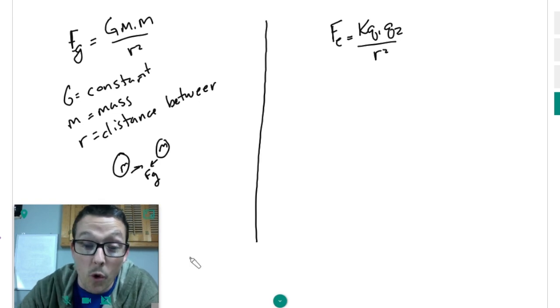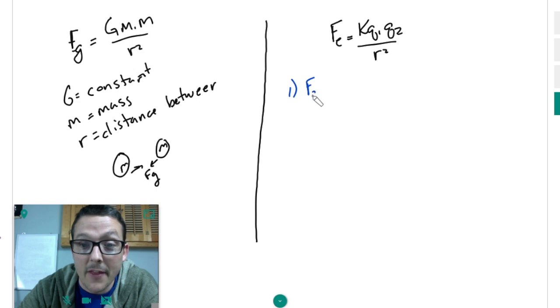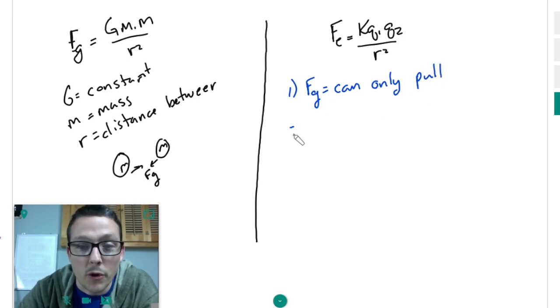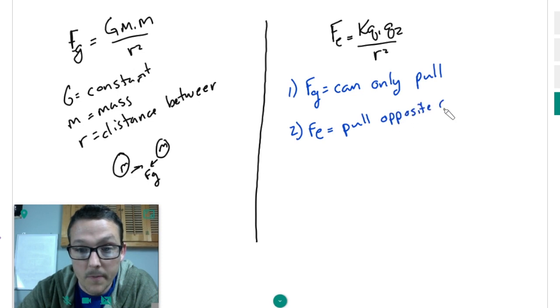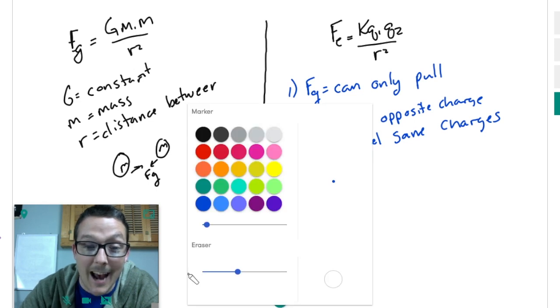Now, there is one difference. And if you remember when we first started talking about this, the one difference is that this FG can only pull. Gravity doesn't push. Gravity only pulls, where FE can pull opposite charges. But it can also repel. And that's when we have same charges. And sometimes, in fact, this will happen at exactly the same time.